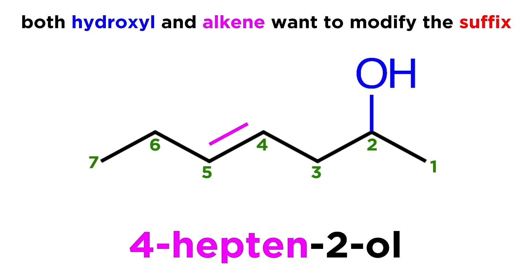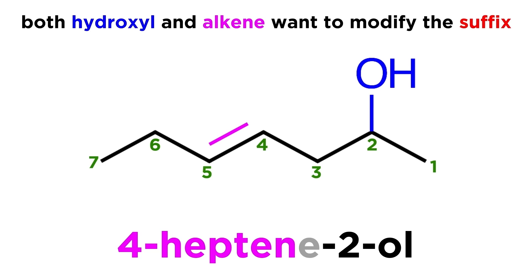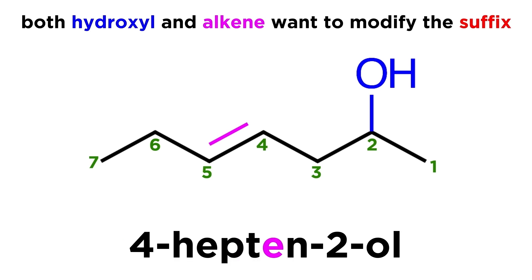So we communicate the presence and location of the double bond, stating the number of the carbon where the double bond begins, but we drop the final 'e' as we have more of the molecule to list — this '-en' is enough to indicate that the double bond is there. And we finish off by communicating the presence and location of the hydroxyl group, and just the suffix '-ol' will suffice for that, as we have already indicated the number of carbons in the chain.